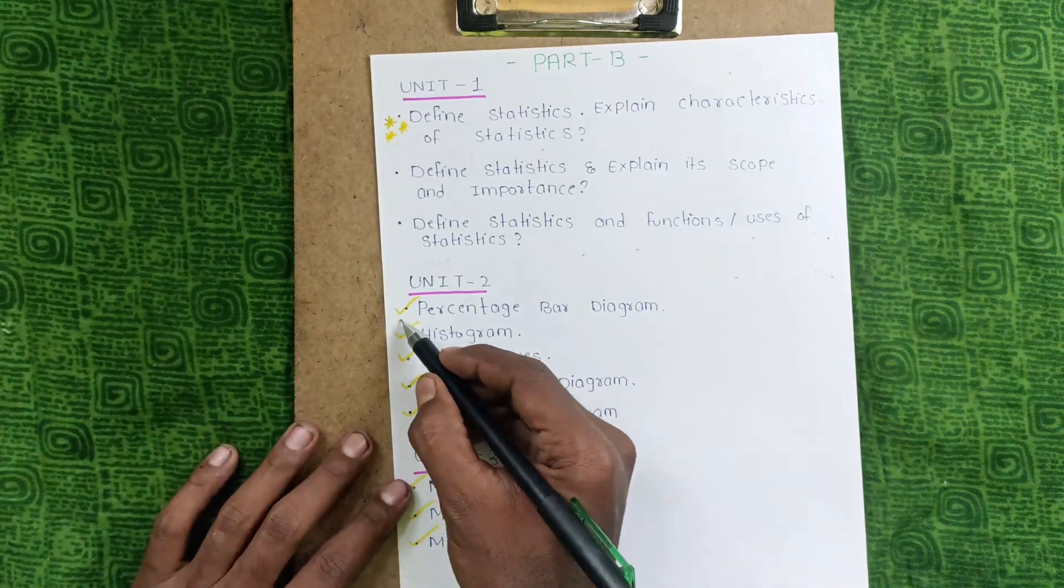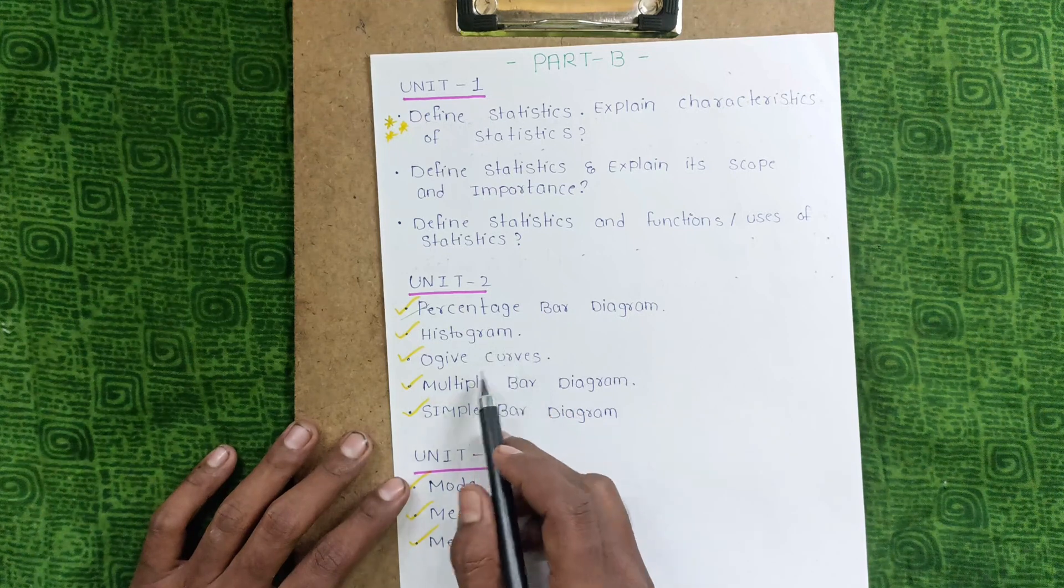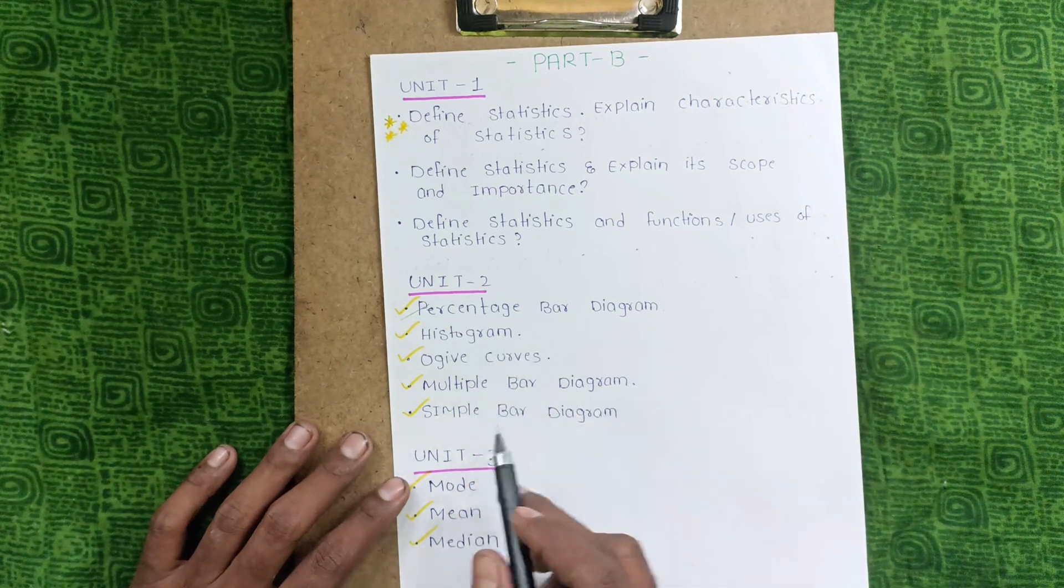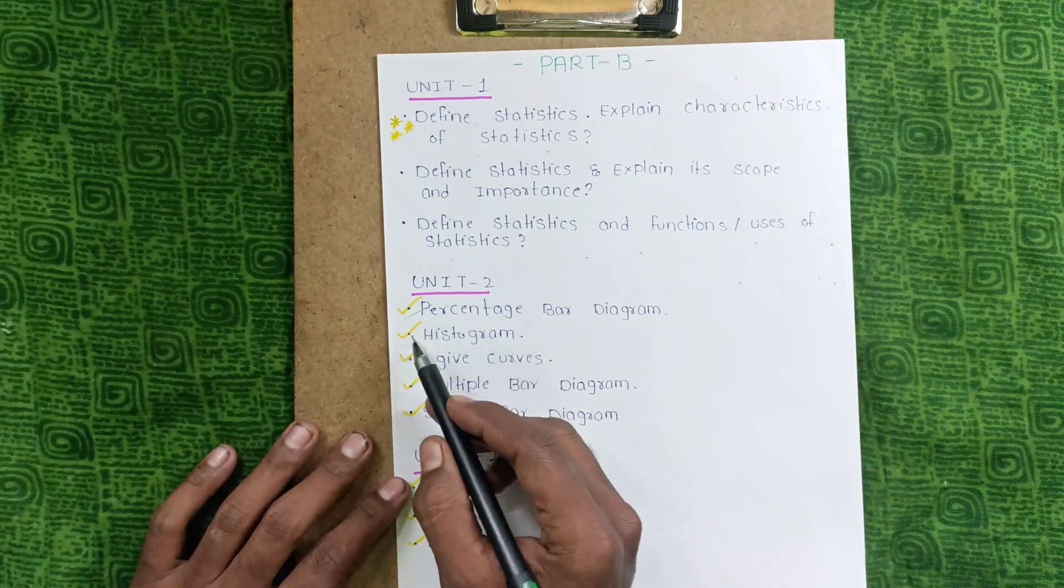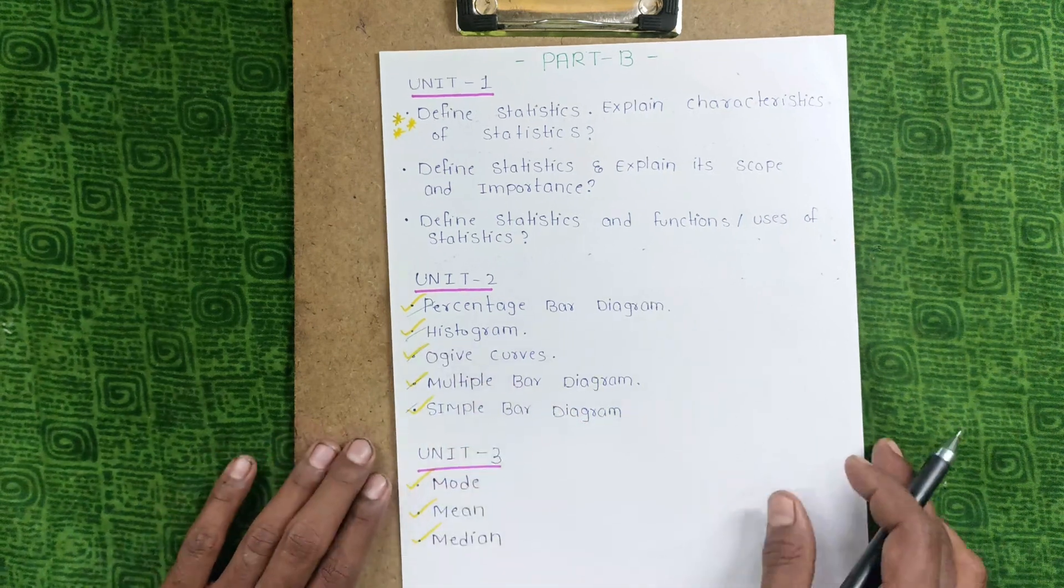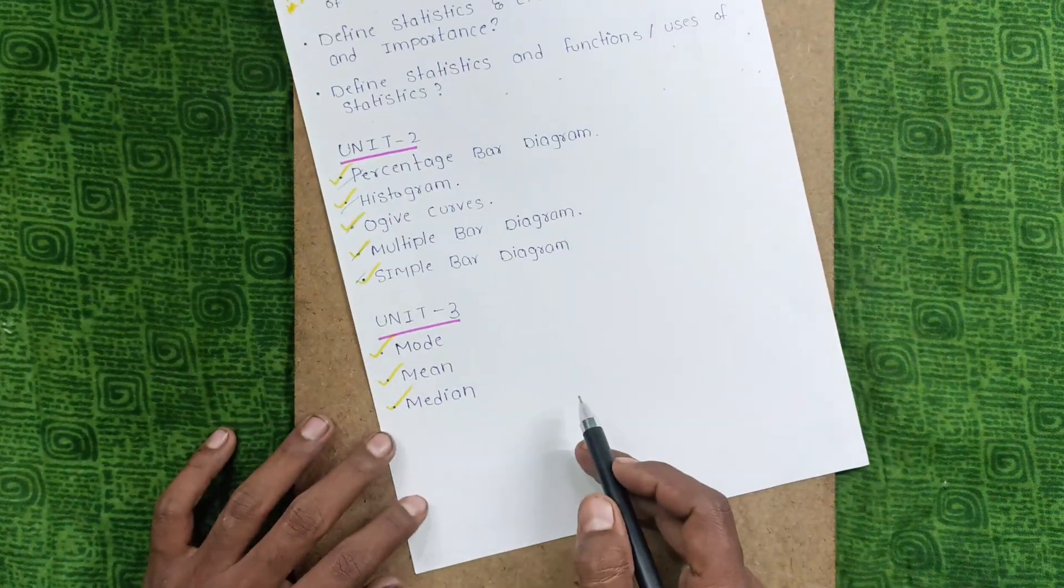be problems like percentage bar diagram, histogram, ogive curves, multiple bar diagram, simple bar diagram. You have to prepare all these problems so that you can score good marks. In Unit 3, you will get only three